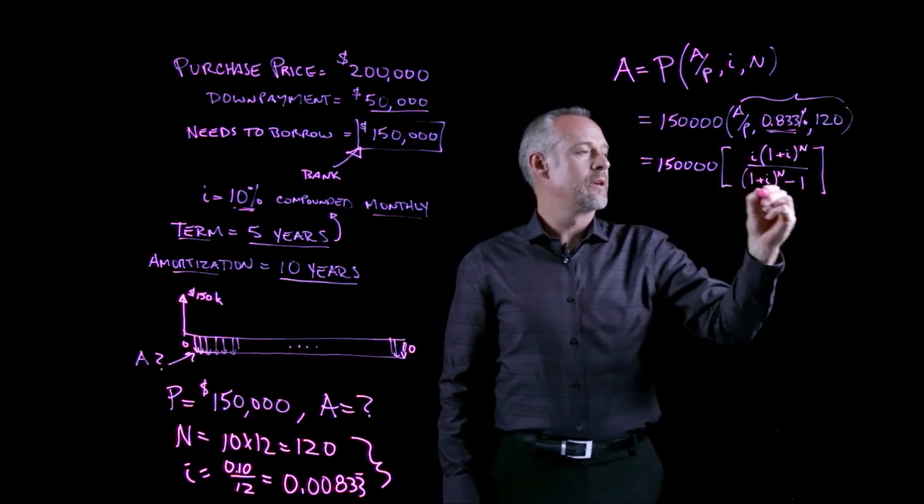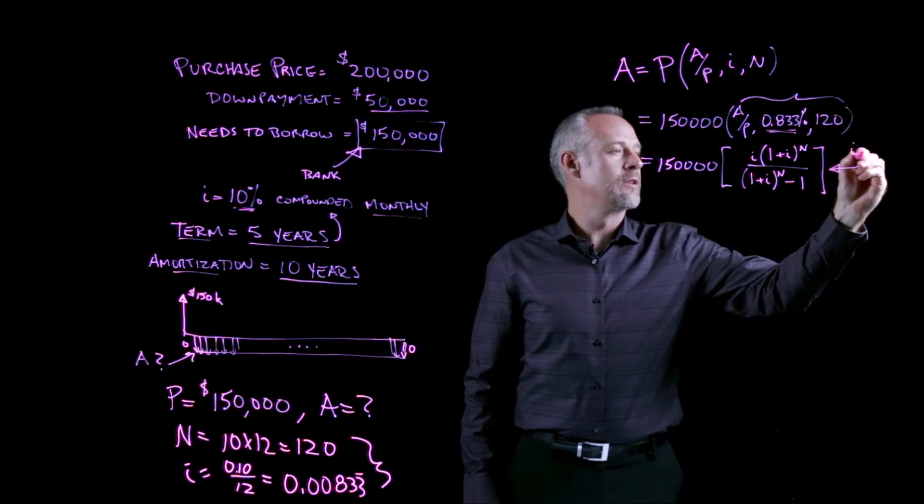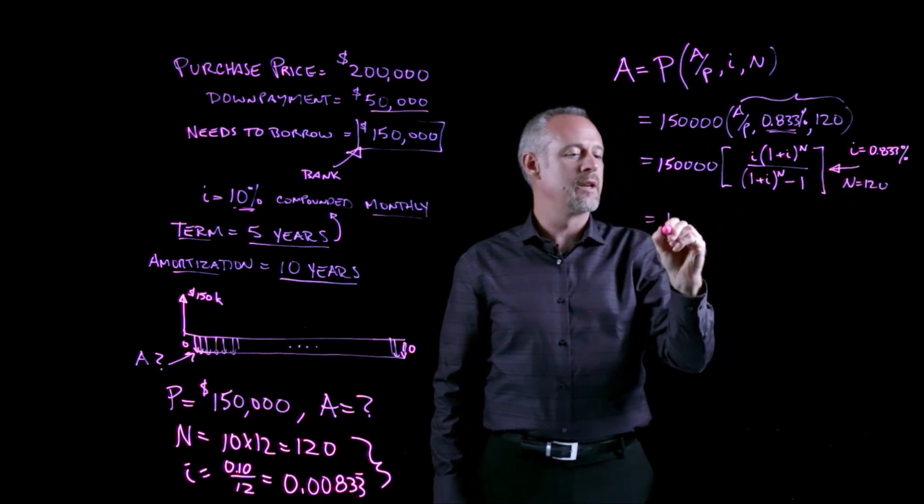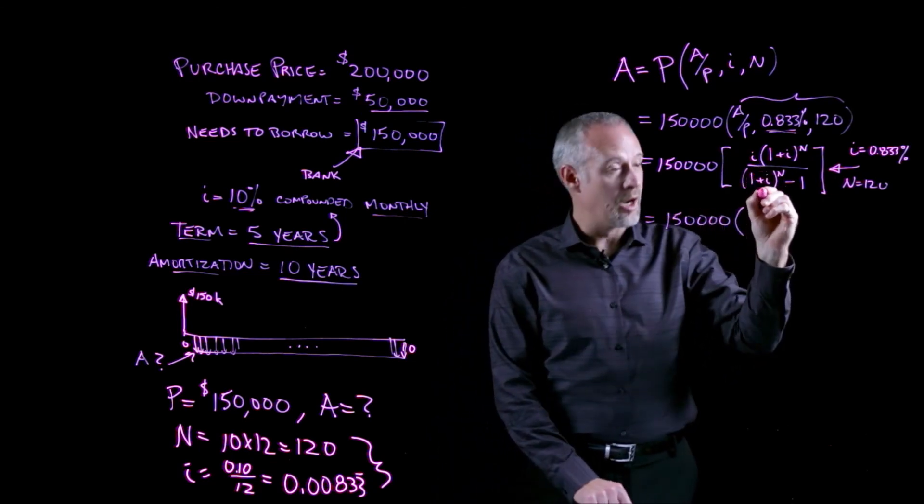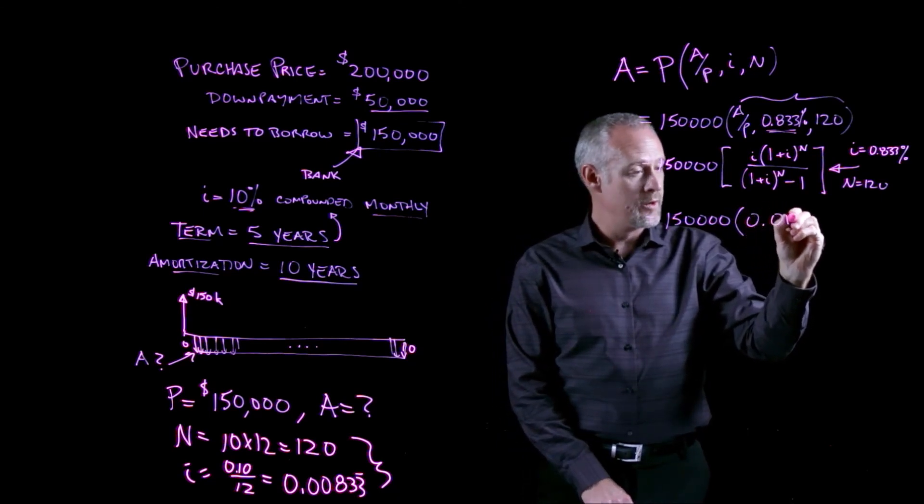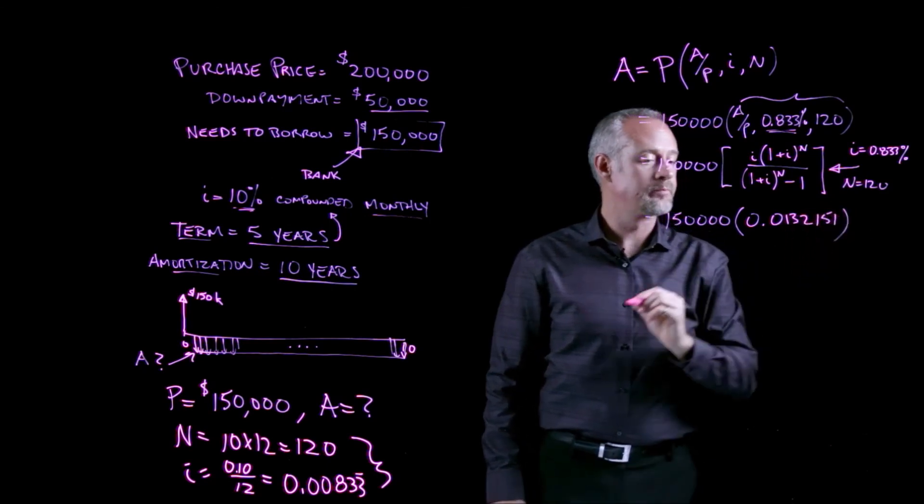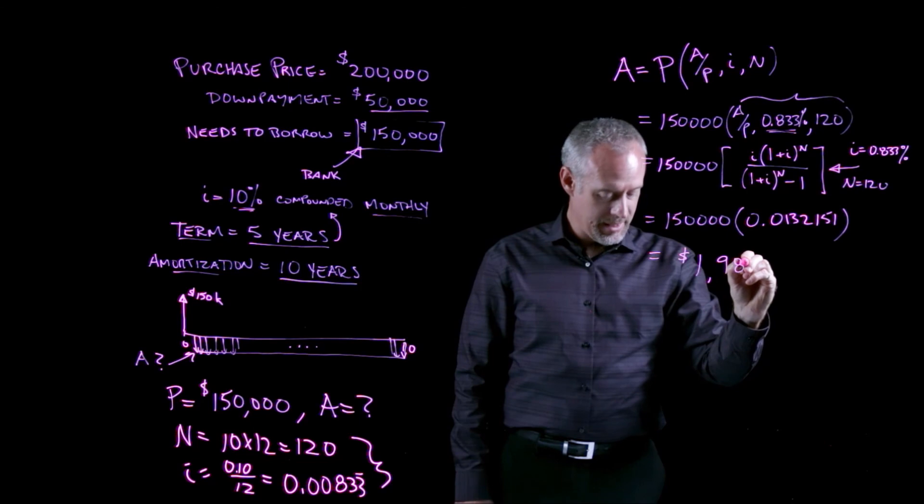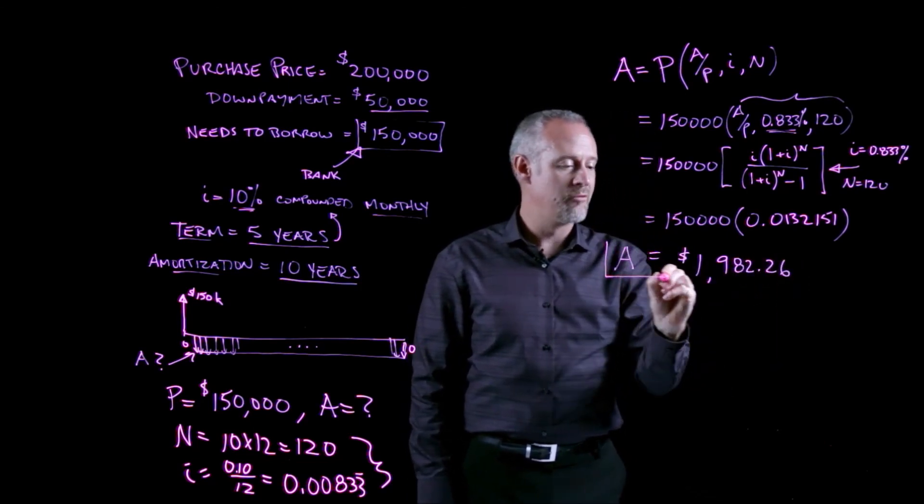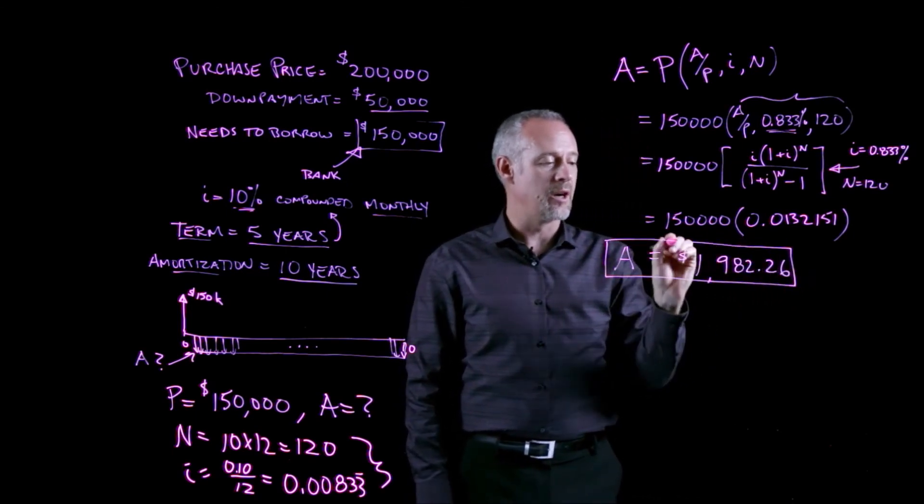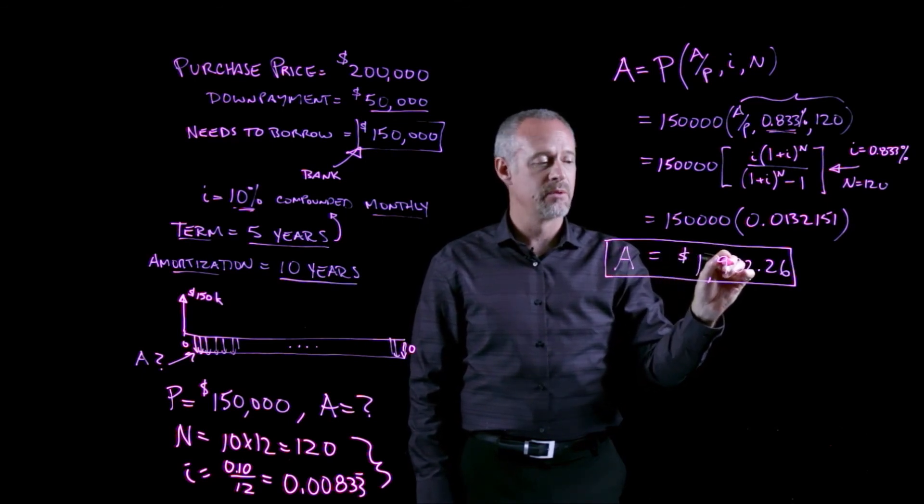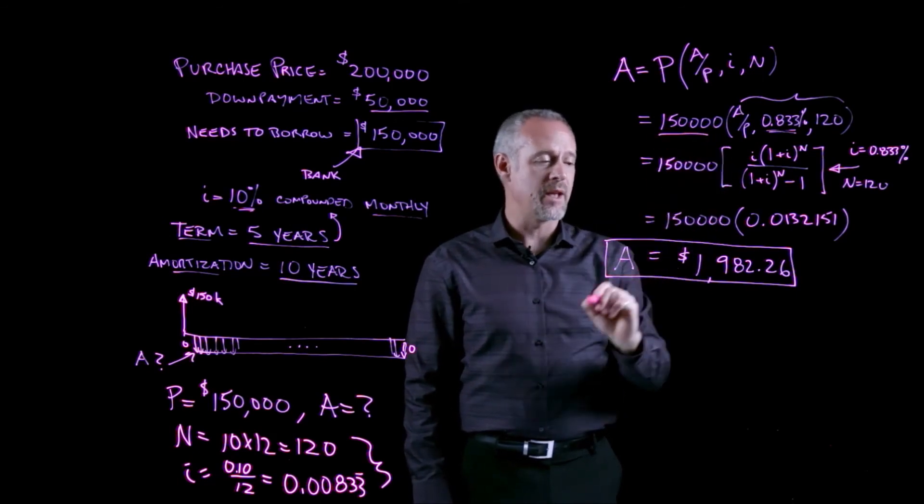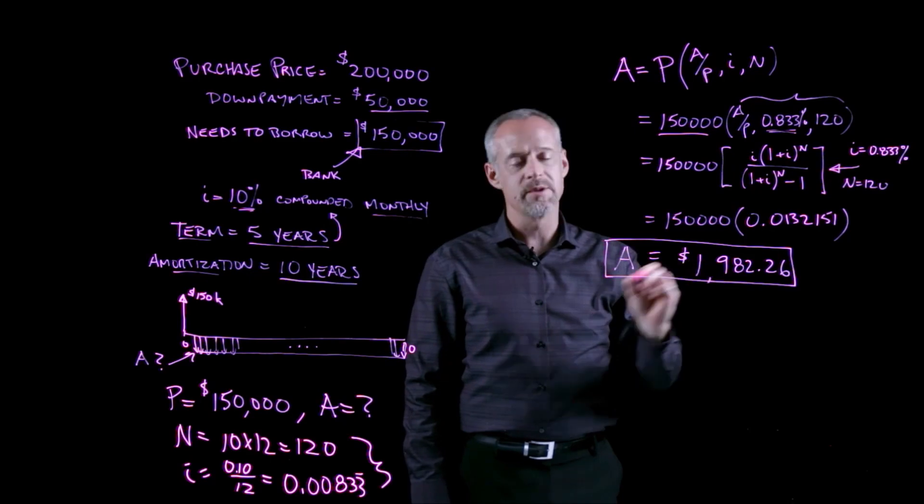And if we substitute into this expression, we substitute our I is equal to 0.833% and our N equal to 120, we should end up with a factor of 0.0132151. And if I go ahead and multiply that out, I end up with 1,982.26 as the value of the annuity. What that means is 120 payments of 1982.26 using an interest rate of 10% compounded monthly will be equivalent to $150,000 that's borrowed. So the answer to our problem is that the monthly payments on this mortgage are 1,982.26.